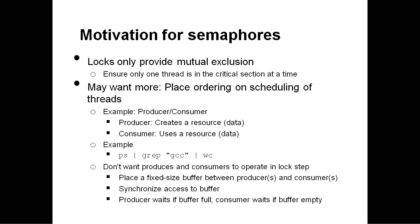We don't want producers and consumers to run in lockstep. For example, we don't want to let ps run for one line of output, then run grep for one line of output, then wc for one line of output, because this causes a lot of context switching and is therefore inefficient. Instead, we'd like to put a fixed-size buffer between the producer and the consumer. This allows the producer to run as long as the buffer isn't full. The consumer can run pulling data out of the buffer as long as it isn't empty.